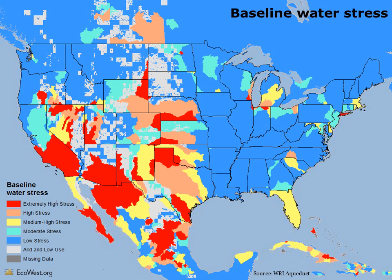This is a measure of water use compared to the renewable supply of water in an area. Red, for example, indicates that more than 80% of available fresh water is used, and supply disruptions are likely to occur due to natural phenomena, competition among users, political pressure, or regulatory measures.